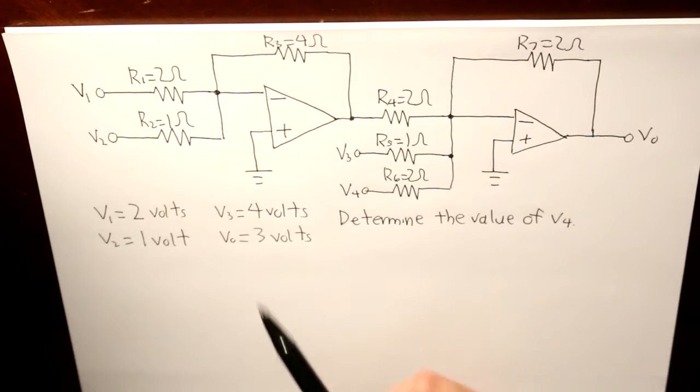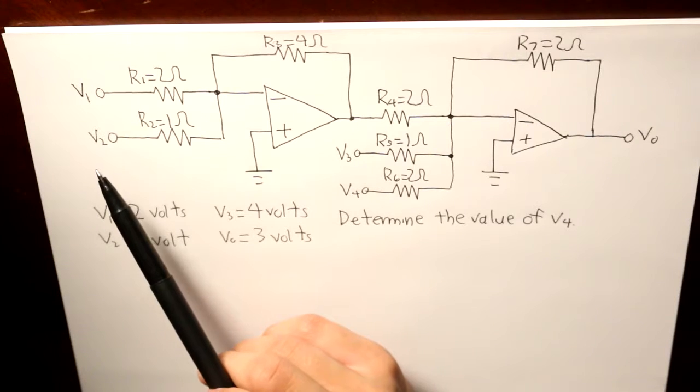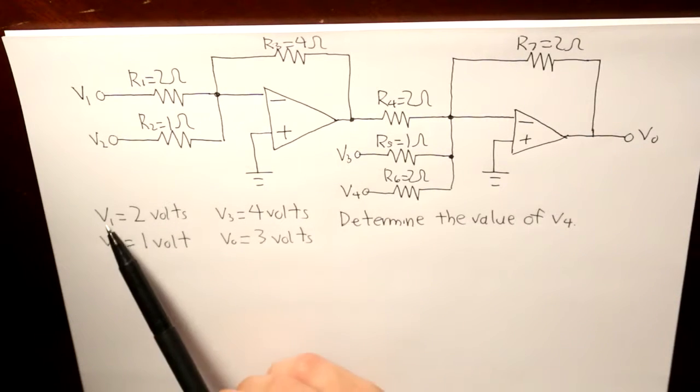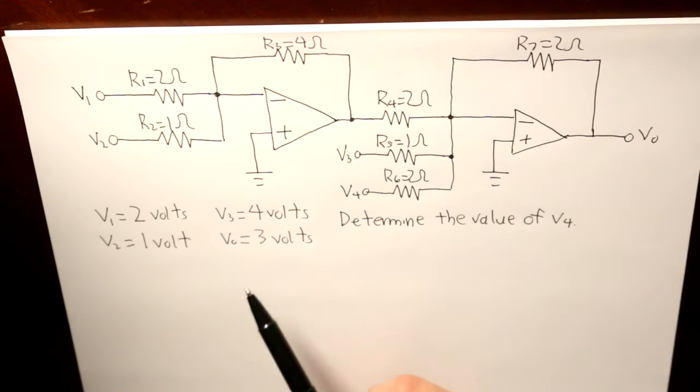There's two feedback resistors and it looks pretty complicated. And the question is, given all of our values of our resistance and given our input voltages, we're given that V1, V2, V3, and V0, our output voltage is given, determine the value of V4.